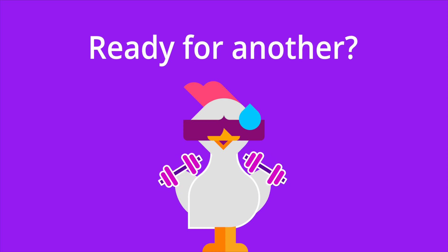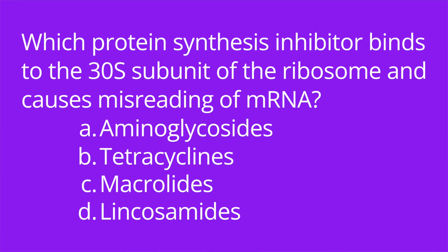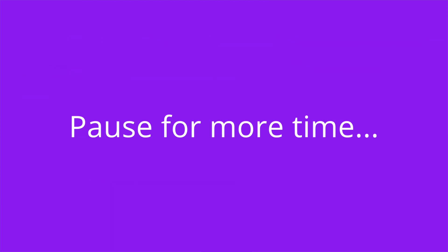Question number two: which protein synthesis inhibitor binds to the 30S subunit of the ribosome and causes misreading of the mRNA? A, aminoglycosides. B, tetracyclines. C, macrolides. Or D, lincosamides. The answer is A, aminoglycosides.